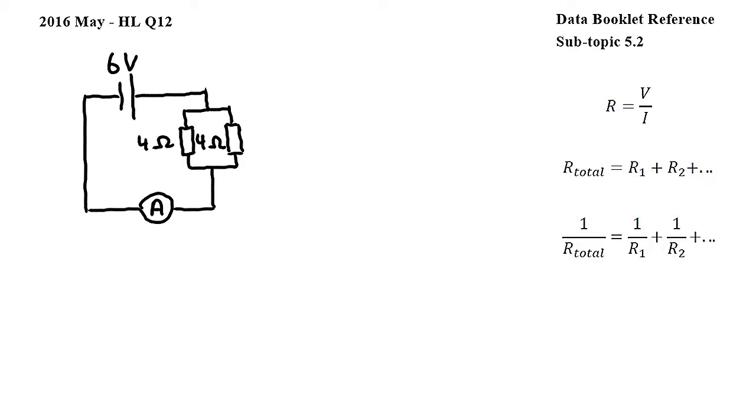Note that for now I didn't draw the voltmeter on the circuit. I will add it in later when we discuss its reading. We will start by using this equation from subtopic 5.2 to find the combined resistance of these two resistors.